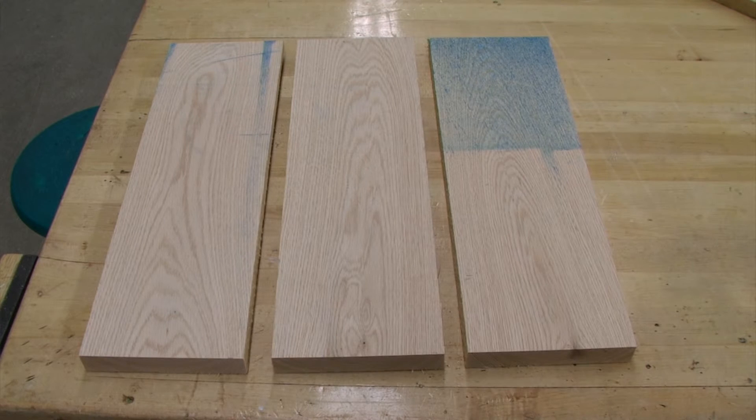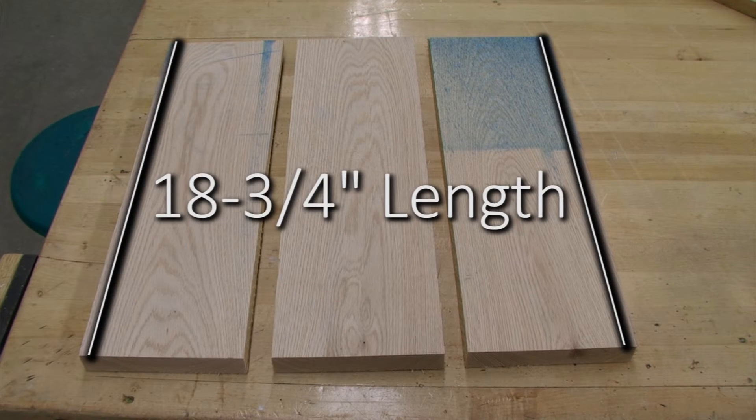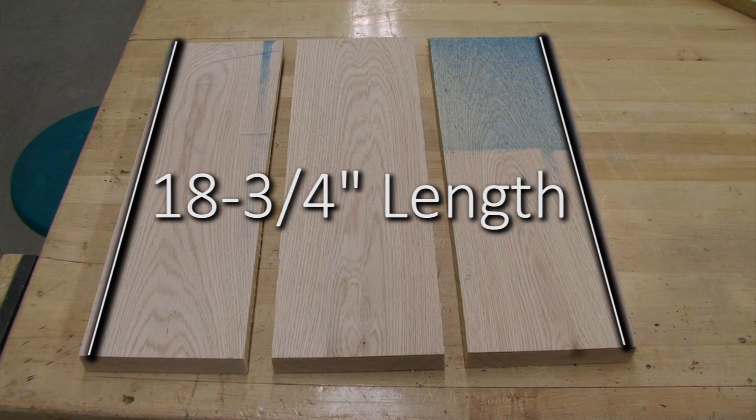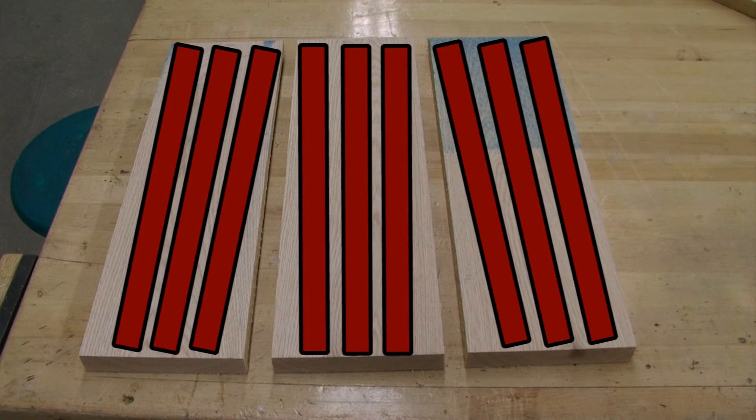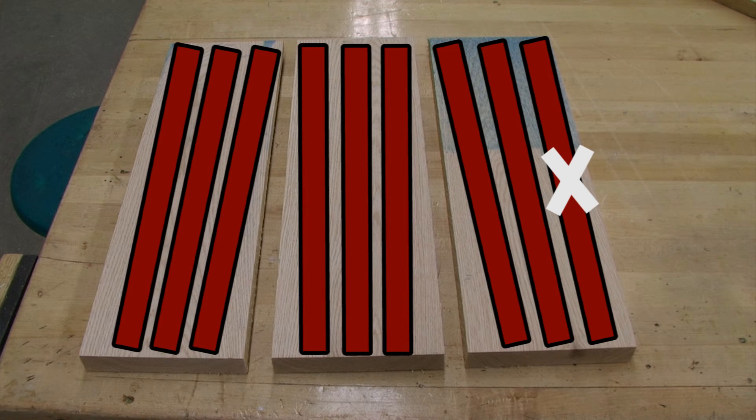Having three boards cut to a length of 18 and 3/4 inches, this should allow me to have nine one and a half inch wide pieces. But again, I only need eight pieces so I'm going to save that additional ninth piece and use that for a different part of my project.